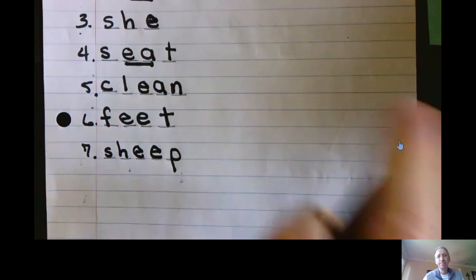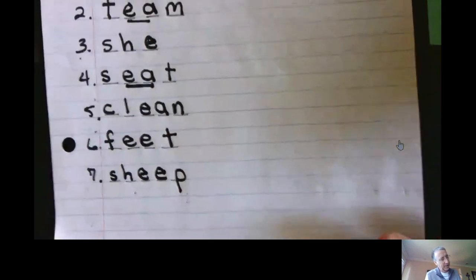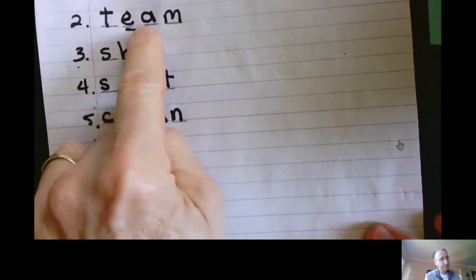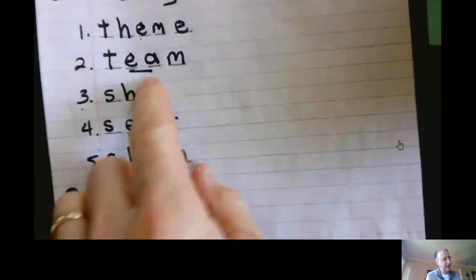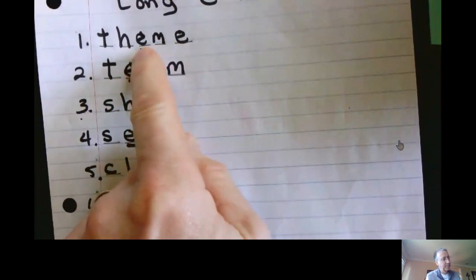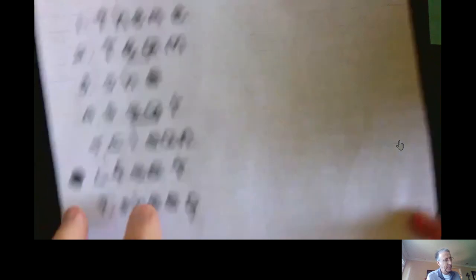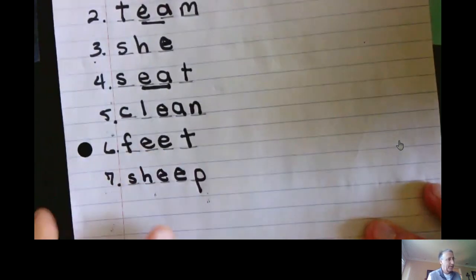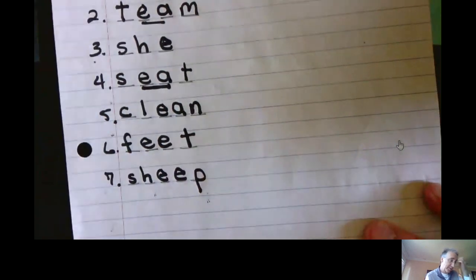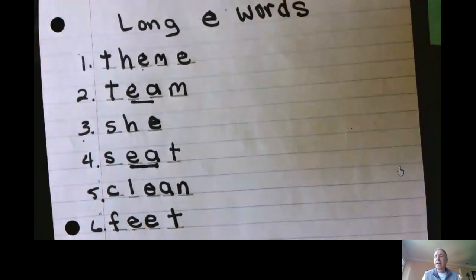Well, how'd you do? I hope you did well. That is the long E. Again, as you read, this is going to help you. When you see E-A, you know it's going to sound like the name of the letter E, or a vowel consonant silent E, more than likely you're going to pronounce it E, theme, or double E's, feet. Now you know how to segment and blend, decode with the long E words. Congratulations. I think you did a good job.